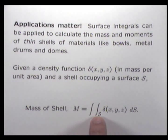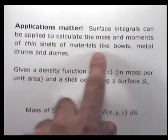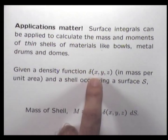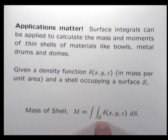This particular integral is useful for calculating the mass of thin shells, thin bowls, thin drums — basically an extension from our first lecture on calculating the mass of thin plates. Those plates sit in the XY plane, whereas these are thin shells, bowls, metal drums, and domes that sit in R³. Given a density function delta — mass per unit area — and a shell occupying the surface S, then the mass of the shell is just the surface integral of the density function.